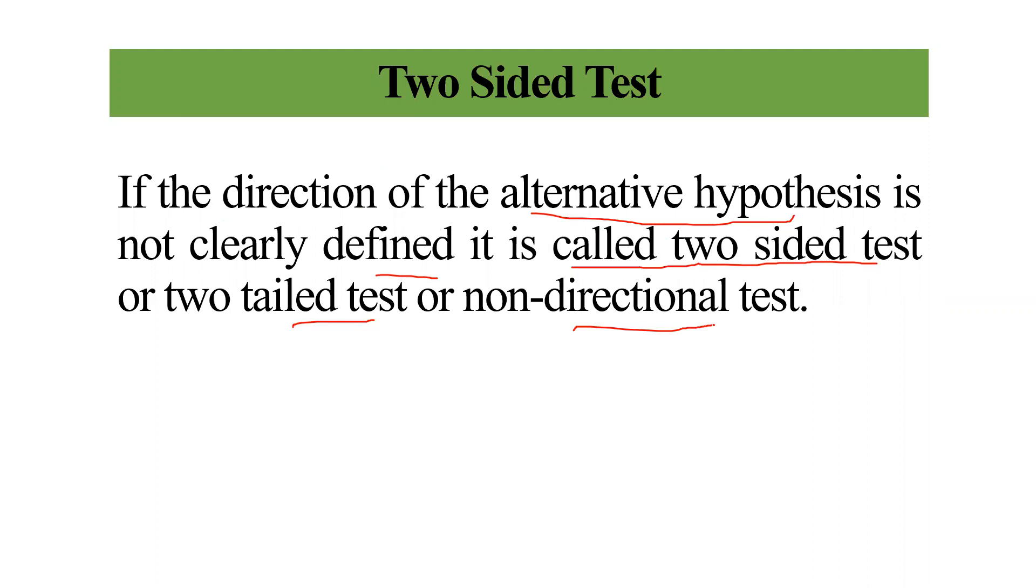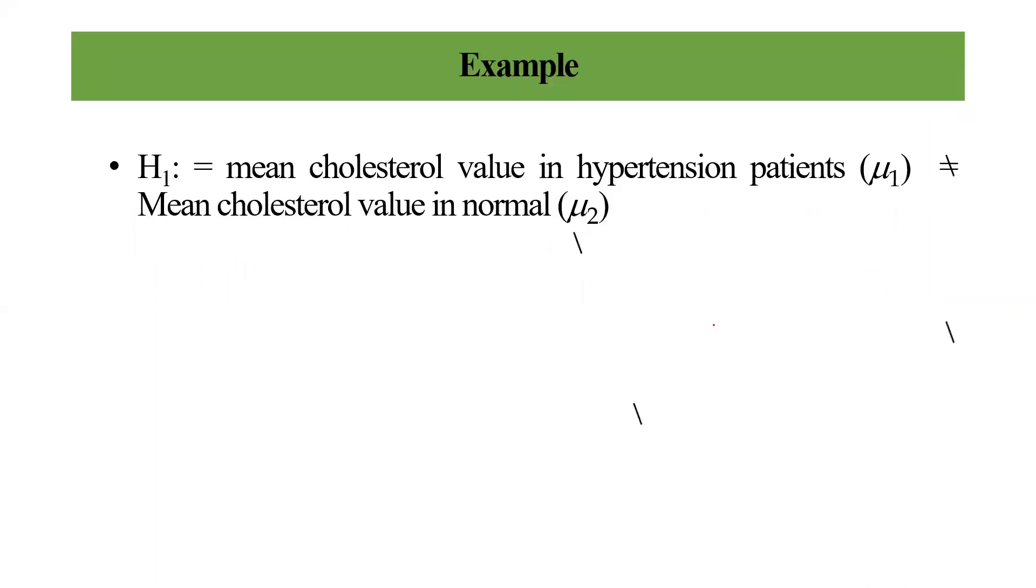Let's have an example for that. In the alternative hypothesis, mean cholesterol value in hypertensive patients does not equal mean cholesterol value in normal patients. It is does not equal to, that means it may be greater than or it may be less than. That's why it is known as two-sided test.